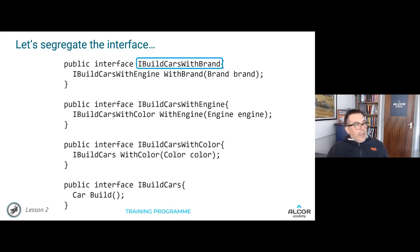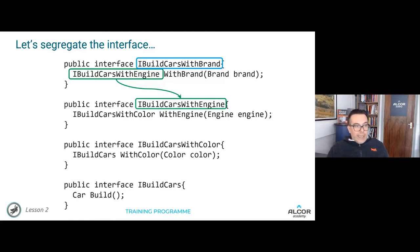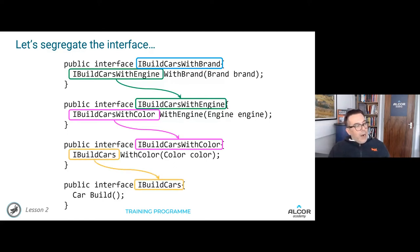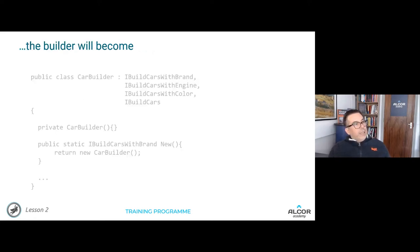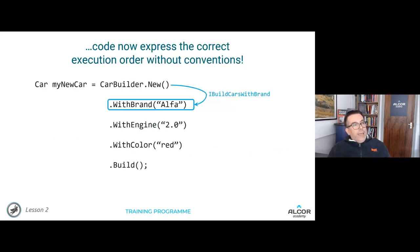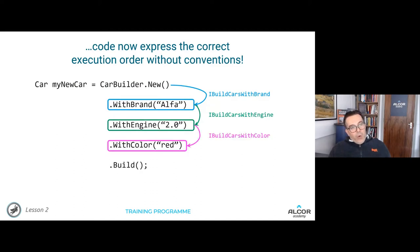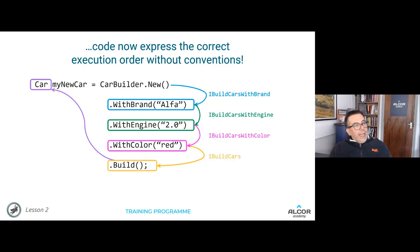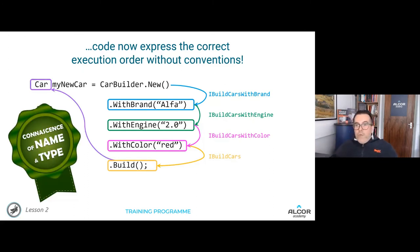The builder pattern is connected to this concept — it needs to be set up with methods before calling build. We can enforce execution order using interface segregation: break down the interface so that 'withBrand' returns a 'BuildCarWithEngine,' which requires 'withEngine,' which returns a 'BuildCarWithColor,' and so on — finally yielding an 'IBuiltCar' with only 'build.' Using a factory method, the compiler now enforces the correct order. We remove connaissance of execution order using connaissance of name and type.